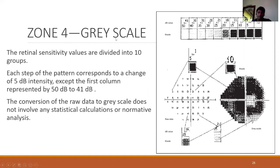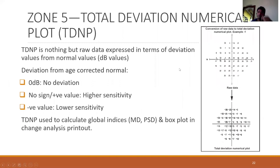The greyscale is the representation of raw data in chart form, with 10 groups in steps of five. This is an absolute scale not compared to any normative data. The total deviation numerical plot is produced once statpack analysis kicks in — the raw data is compared to the normative database. A value of 0 in the total deviation numerical plot means that point has zero deviation from normal — it is a perfectly normal point. This is very different from a value of 0 in the raw data, which indicates an absolute scotoma. Positive values indicate sensitivity higher than normal; negative values indicate lower sensitivity.